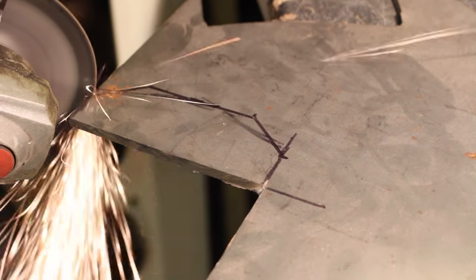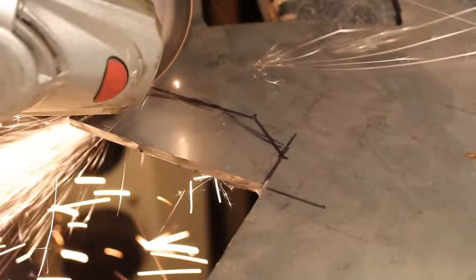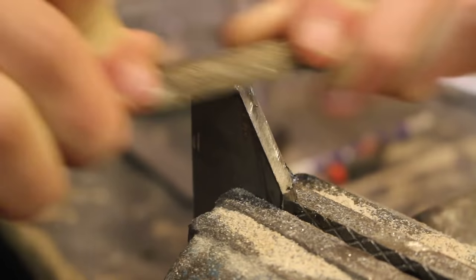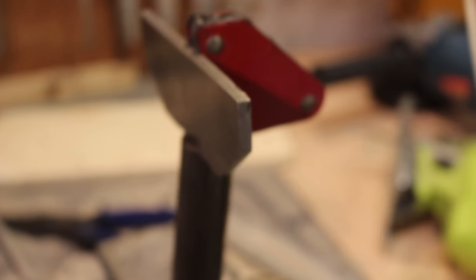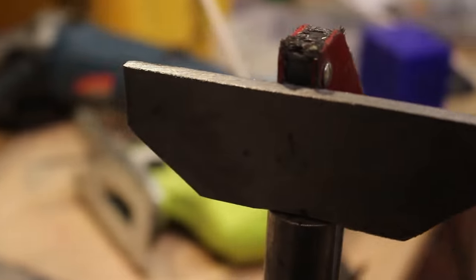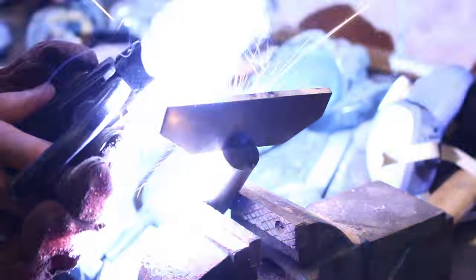I cut the actual rest part of the tool rest out of some 6mm mild steel sheet. I want it to be welded on at an angle so that it's slightly tipping forwards so that I can get it up really close to the work. I weld it on just using my arc welder as usual.